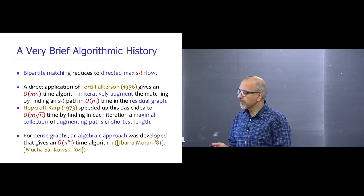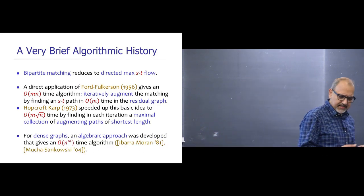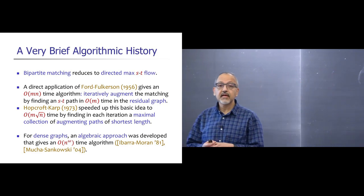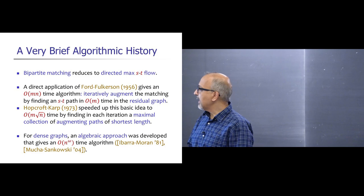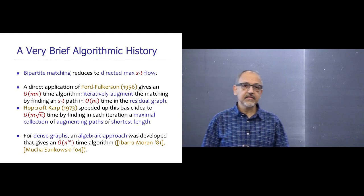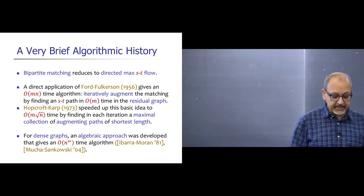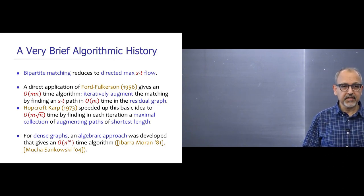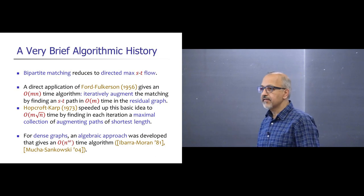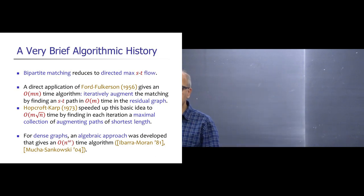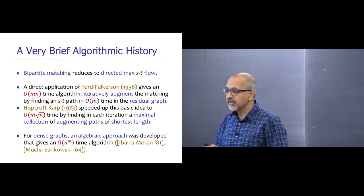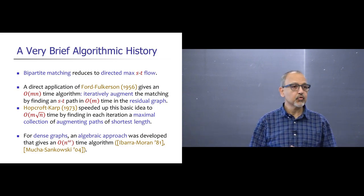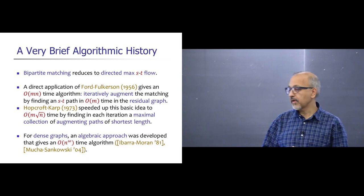Around the same time, a different algebraic approach was developed based on fast matrix multiplication. This gives another way to solve the bipartite matching problem whose complexity is tied to the complexity of matrix multiplication. Here omega is the matrix multiplication exponent, and its current value is approximately 2.37, giving an O(n^2.37) time algorithm for bipartite matching.